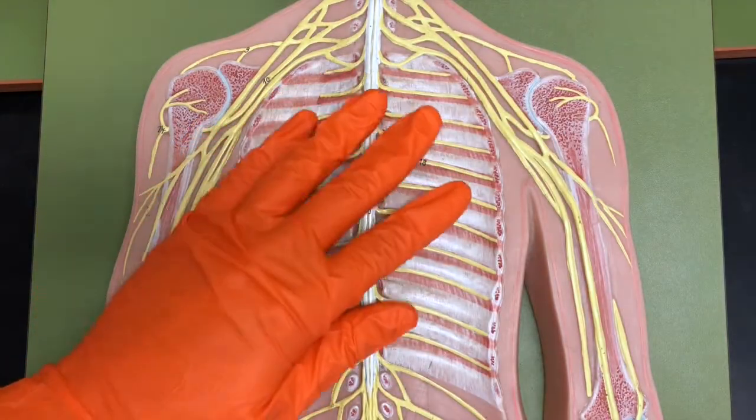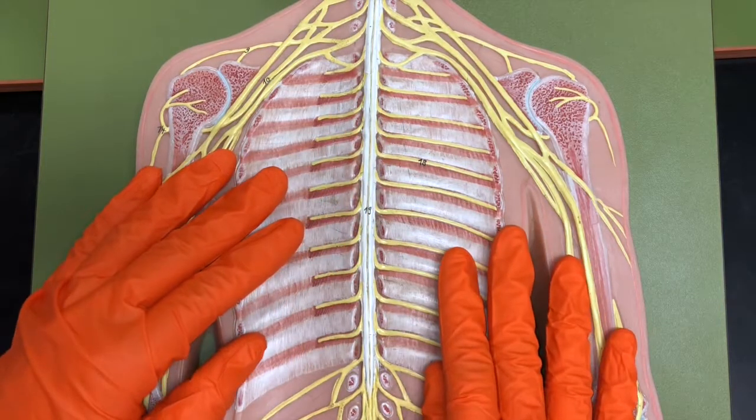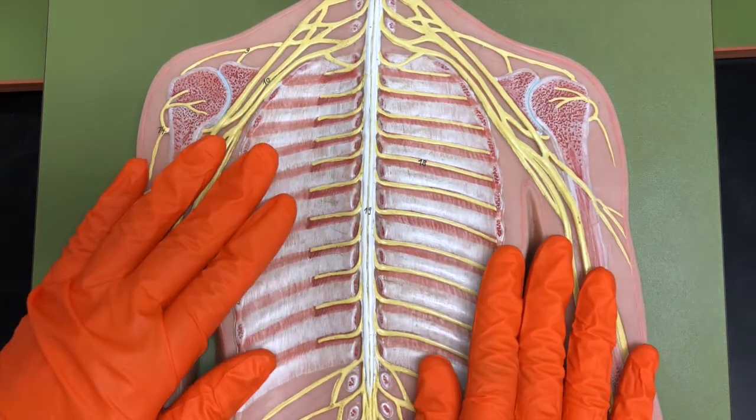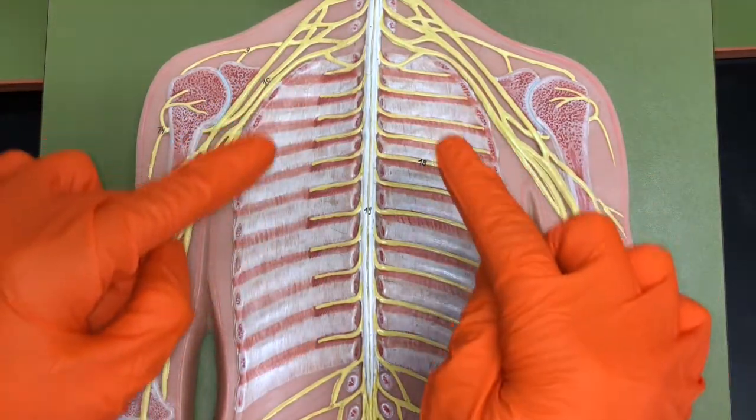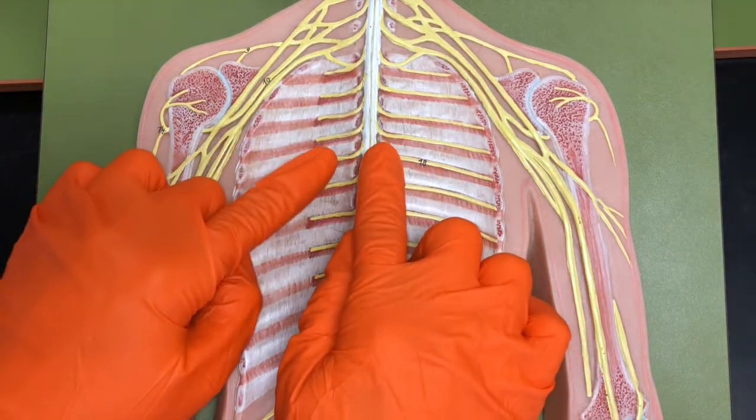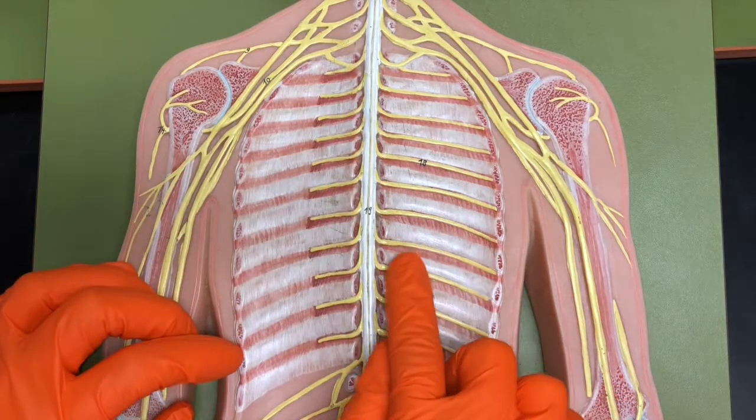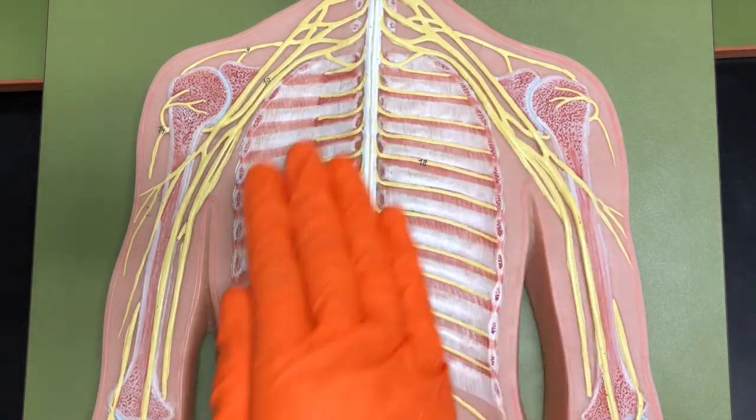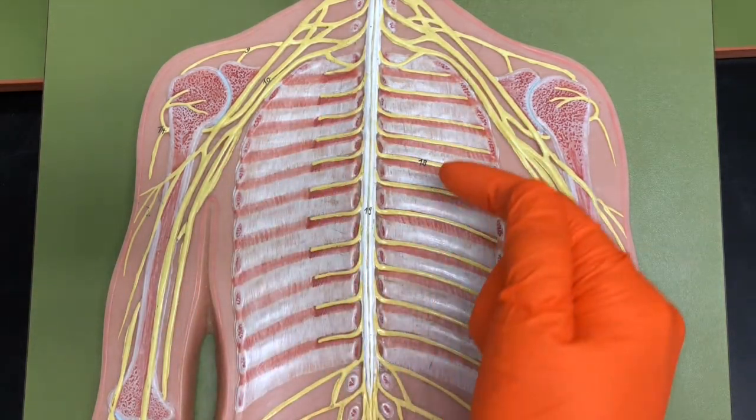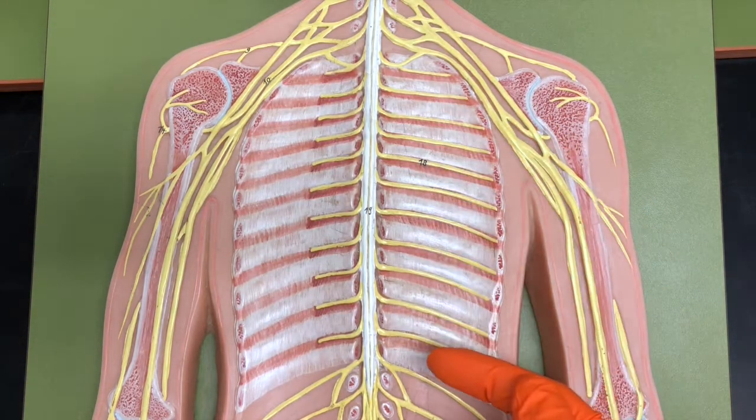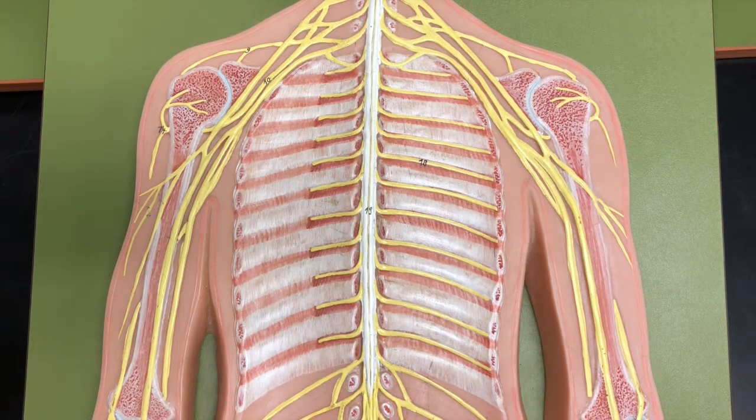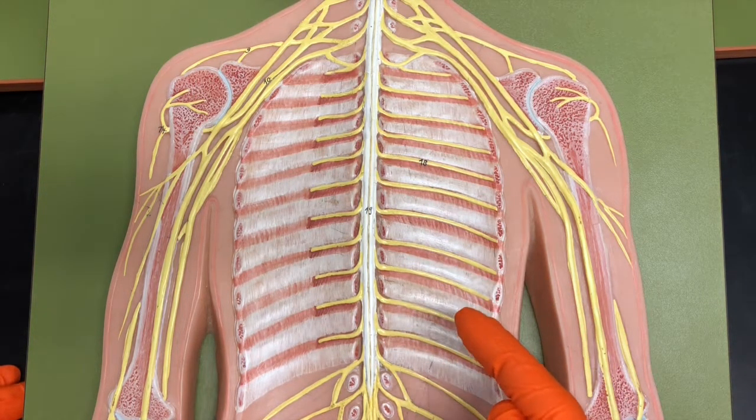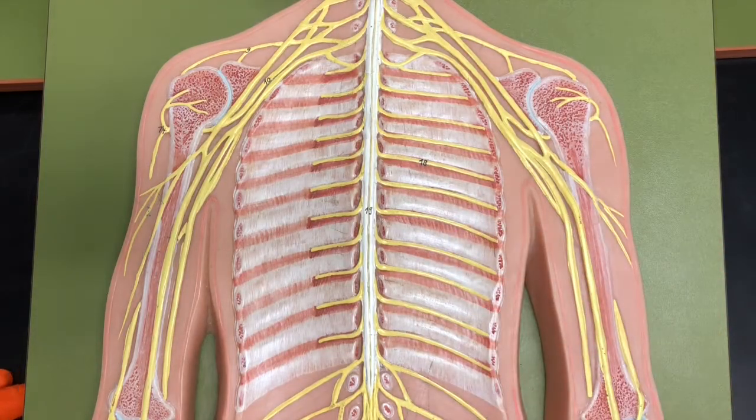Here in the thoracic region, we actually don't have a thoracic plexus. The anterior rami of these thoracic spinal nerves actually just form the intercostal nerves. So whenever you're looking at this area, we don't have a thoracic plexus. These are just the intercostal nerves. And then remember that intercostal just refers to in between the ribs.